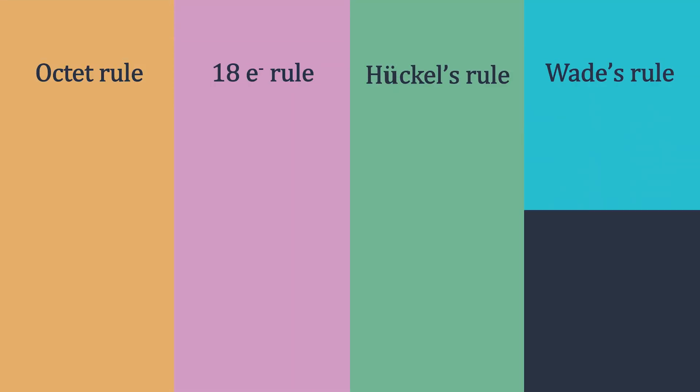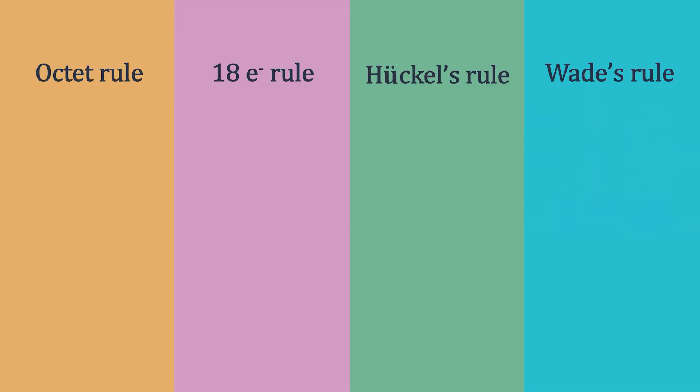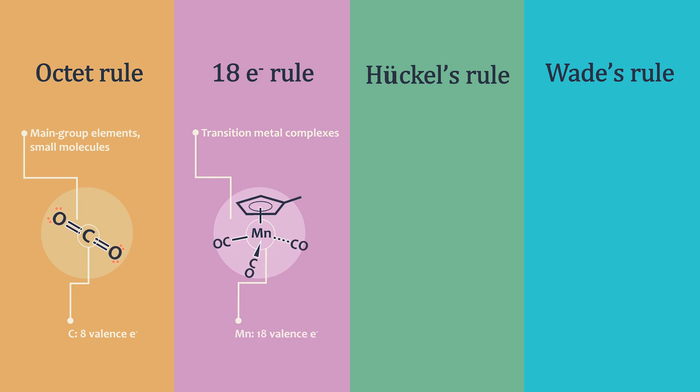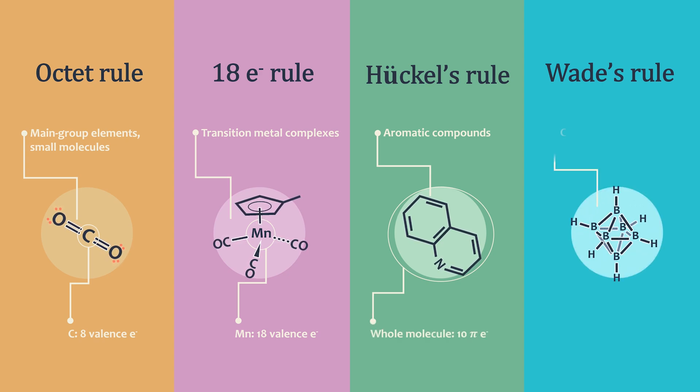There are several electron counting rules in chemistry depending on the type of the molecules and the purpose of counting. For example, the octet rule is used for main group elements and small molecules such as carbon dioxide, the 18 electron rule is used for transition metal complexes, Huckel's rule is used for aromatic compounds, and Wade's rule is used for cluster compounds such as this Bohrian cluster.